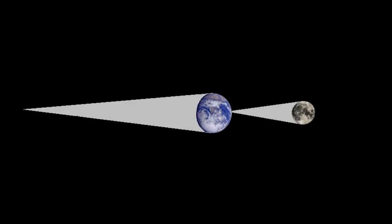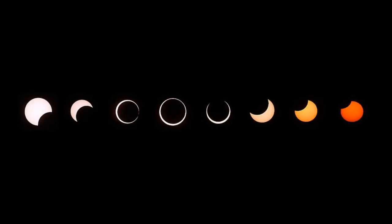An annular eclipse of the Sun occurs when the Moon's shadow passes over the Earth's surface, but because the Moon is at the furthest point of its orbit, it cannot cover all of the Sun, leaving a ring of the Sun visible. During an annular eclipse, there is no point at which it is safe to look directly at the Sun without protection; however, you can get away with a quick glance.